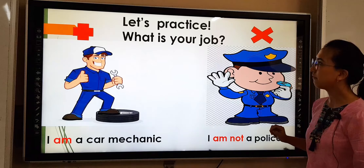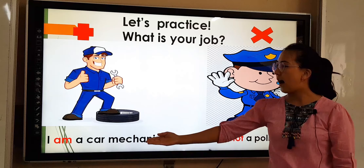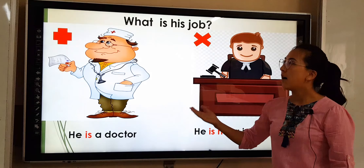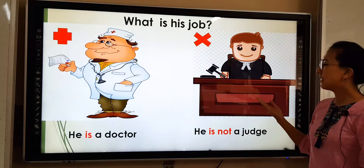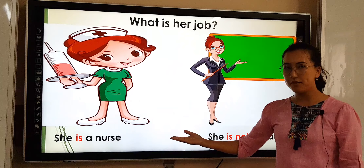Let's practice. Let's make a positive and negative sentence. What is your job? Positive: I am a car mechanic. Negative: I am not a police officer. What is his job? Positive: He is a doctor. Negative: He is not a judge. What is her job? Positive: She is a nurse. Negative: She is not a teacher.